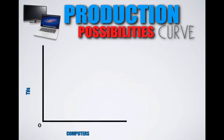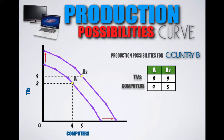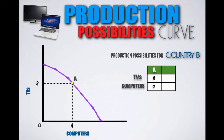Now, can production possibilities curves shift? Yes. Let's take the PPC for Country B from earlier. Let's say Country B is currently producing at Point A, where it produces eight TVs and four computers. But let's say something fundamentally changes, allowing it to produce more of both TVs and computers. An outward shift to the production possibilities curve would allow Country B to produce at Point A2, where it now produces nine TVs and five computers — a PPC shifting outward means the capacity to produce becomes greater. Conversely, if something fundamentally changes for the worse, Country B might now produce at Point A2 at a combination of seven TVs and three computers. The new PPC, which has shifted inward, means that Country B's capacity to produce has shrunk and it simply cannot produce as much as it used to, even if it's being productively efficient.